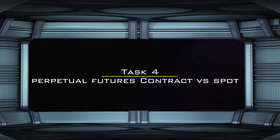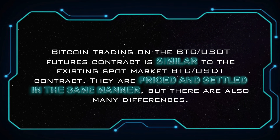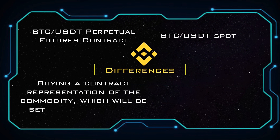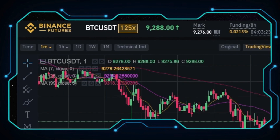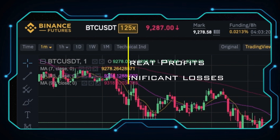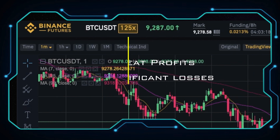Task 4: Perpetual Futures Contract vs Spot. Bitcoin trading on the BTC/USDT Futures Contract is similar to the existing Spot Market BTC/USDT contract. They are priced and settled in the same manner, but there are also many differences. With a Futures Contract, you are buying a contract representation of the commodity, which will be settled in the future. With the Spot Market, you are buying or selling directly. Unlike the Spot Market, Binance Futures allows up to 125x leverage, which can create great profit and significant losses.